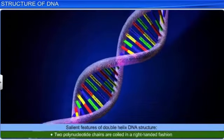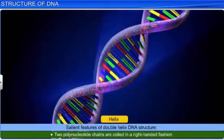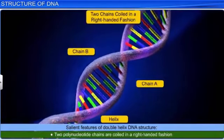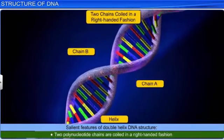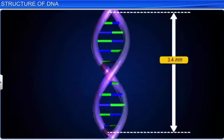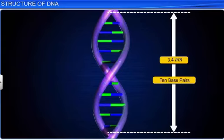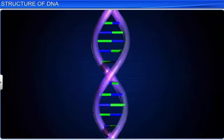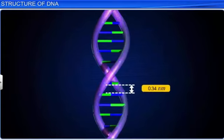Another salient feature of the helix structure is that the two chains are coiled in a right-handed fashion. Therefore, the pitch of the helix is 3.4 nanometers, and each turn consists of about 10 base pairs. As a result, the distance between a base pair and a helix is around 0.34 nanometers.